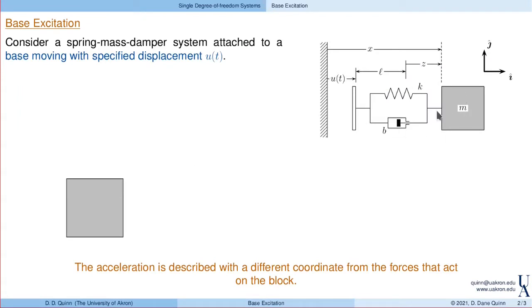So here's the problem. We have a mass, we have a spring, we have a damper, just as always, and it's attached to a base. However, that base is no longer fixed in the ground. Instead, it moves with some specified displacement.